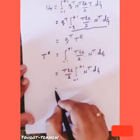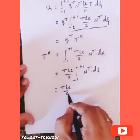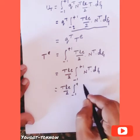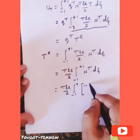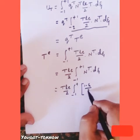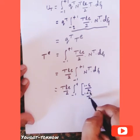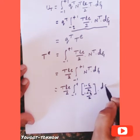Writing N transpose in column form: N transpose equals [(1 minus zeta)/2, (1 plus zeta)/2] transpose. So the expression becomes t·(L_e/2) times the integral of that column vector dζ.